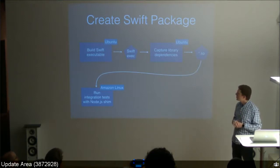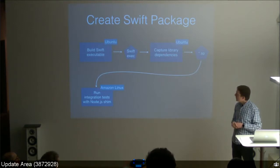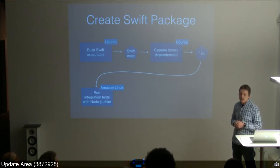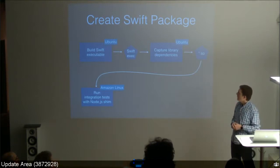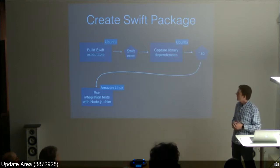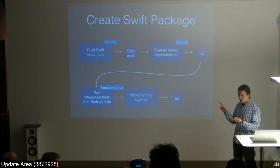You cannot really build for the target system directly, so I have an integration test setup where you can test locally. Some clever person found out what exact Red Hat version Amazon is using — they ran a Lambda function that scraped all the contents of the Lambda environment and put this into a Red Hat container, which they offer as a Docker image. This is basically what you can use as a local integration test. You zip together the Swift executable, the dynamic libraries, and the JavaScript file, and this is the package you upload to Lambda.